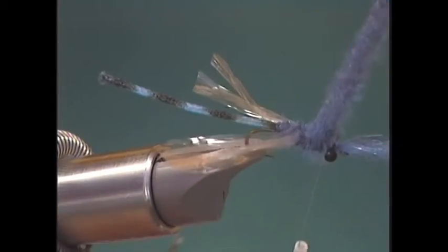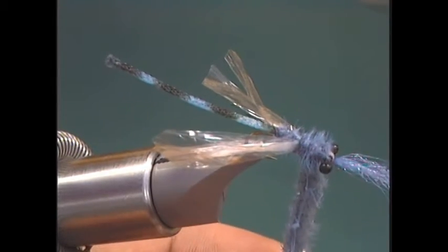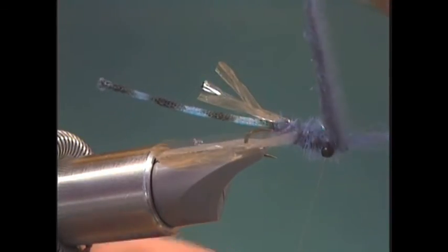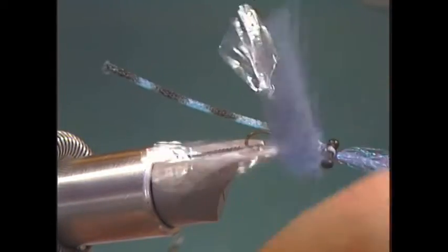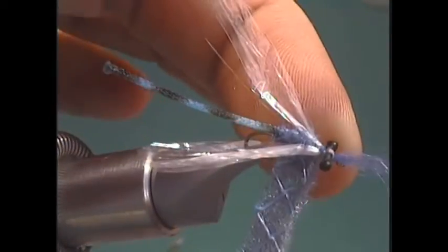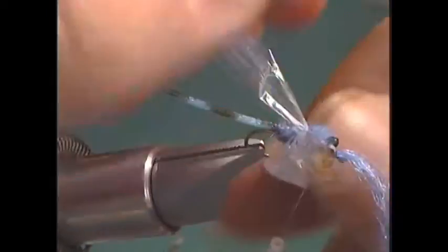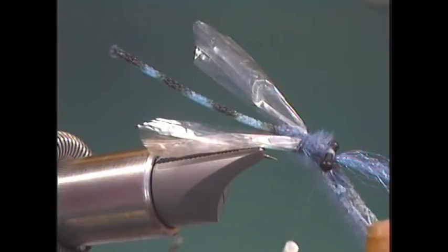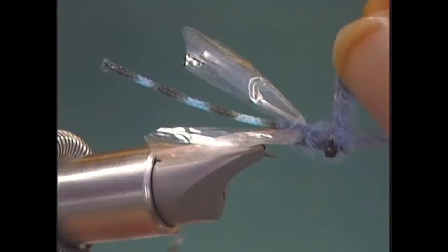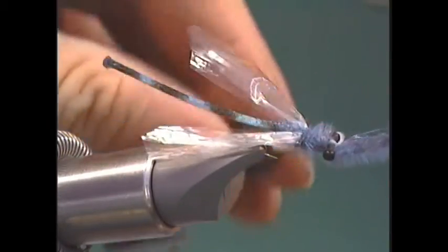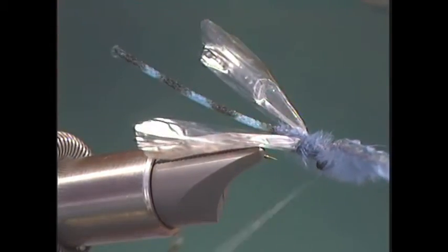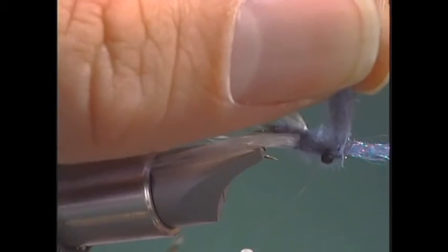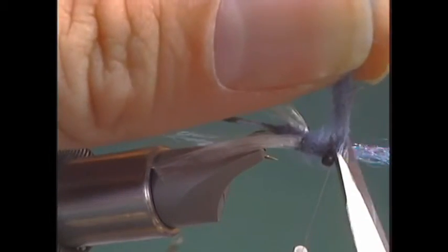Then we take one more turn right behind the eye. Then we'll come up right below the eyes, just like so. Tie it off right behind the hook eye, but right in front of the monofilament eyes. Trim off the excess.